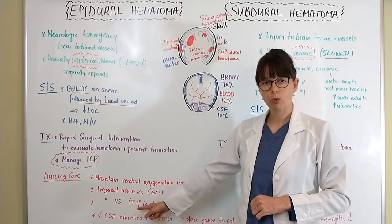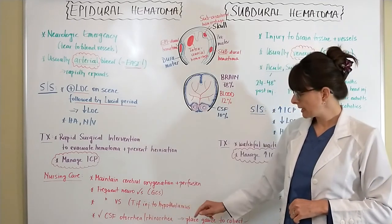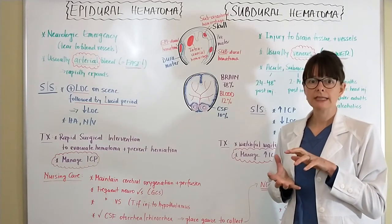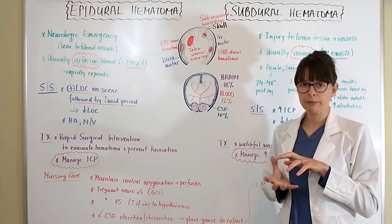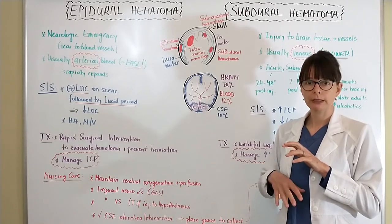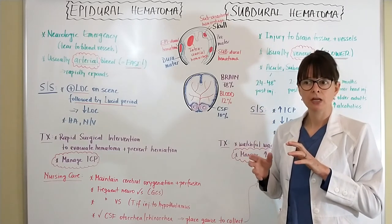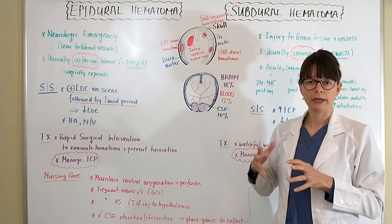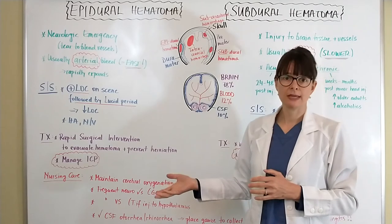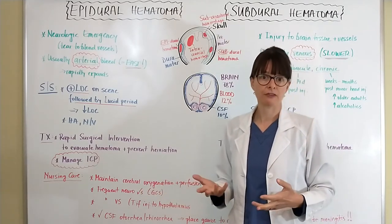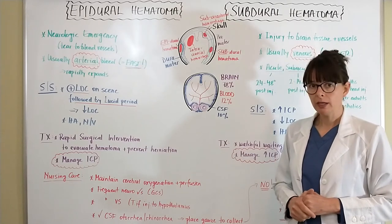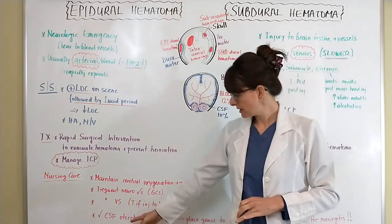Temperature is especially important to monitor if there is an injury to the hypothalamus, because that is the center of the brain that regulates temperature. If it is injured, the patient may have very spiking or very low body temperatures that could be mistaken for infection. So we need to closely monitor vital signs and distinguish hypothalamic injury from other causes.